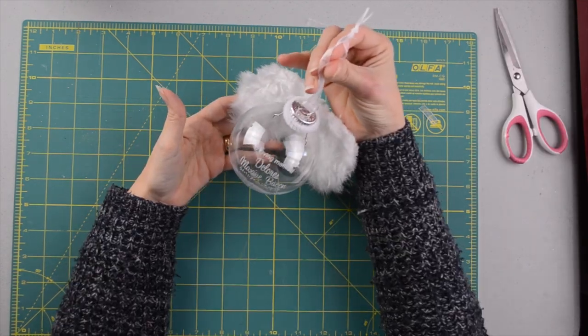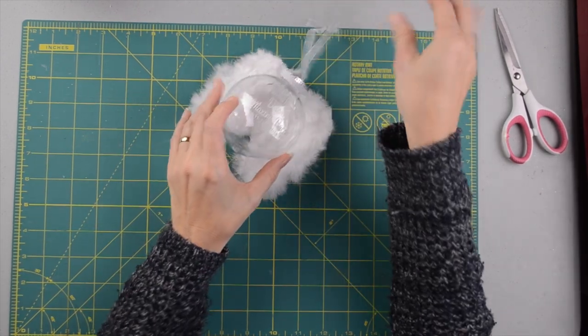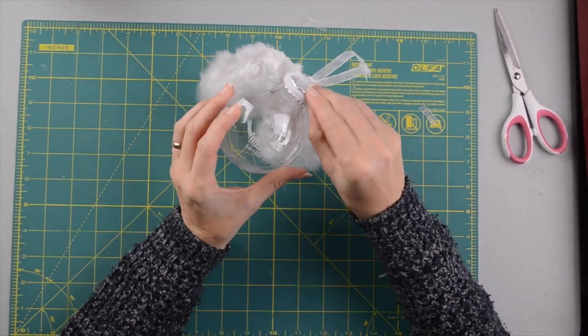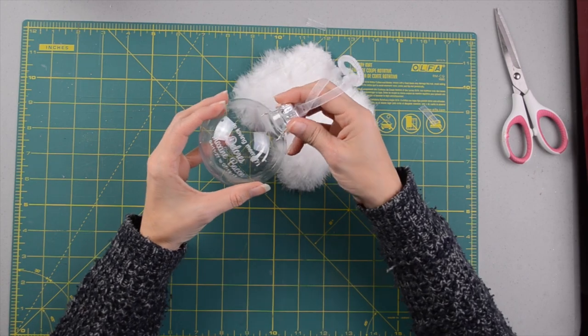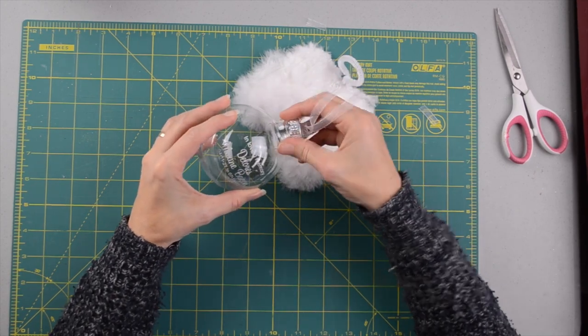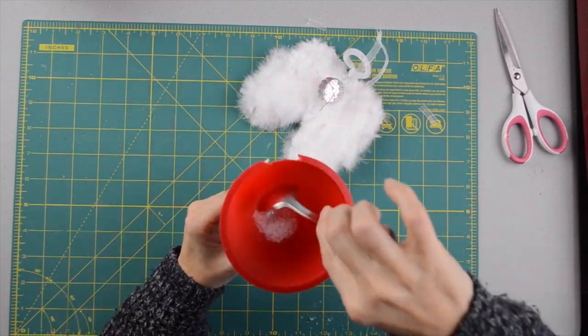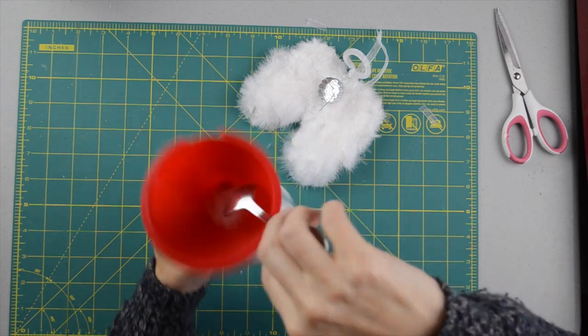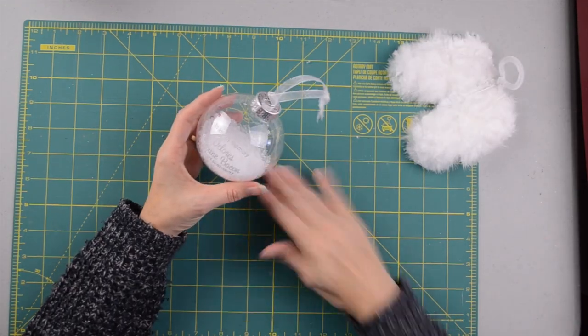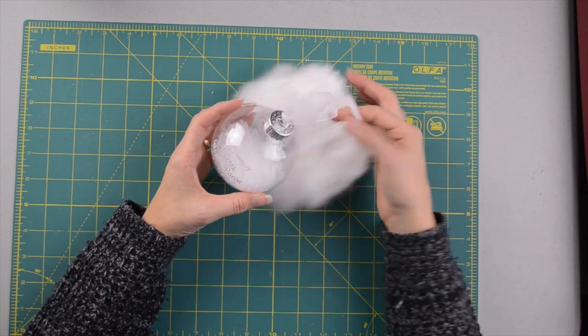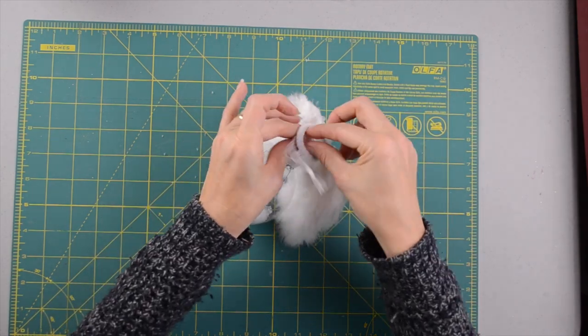I am going to see what it looks like with some of the fake snow inside the ornament. So let me check that out. Let's see how that looks with that in there. So I'll put the lid back on and now I'm going to put my angel wings on.